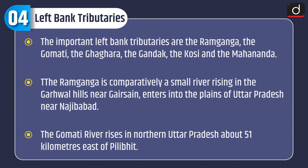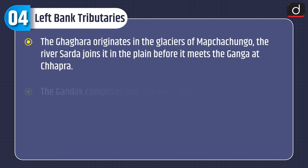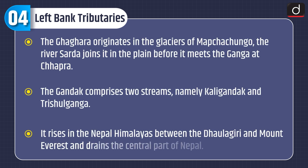The Ramganga is comparatively a small river rising in the Garhwal hills near Gersen and enters the plains of Uttar Pradesh near Najibabad. The Gomti river rises in northern Uttar Pradesh about 51 km east of Pilibhit. The Ghagra originates in the glaciers of Mapchachungo, and the river Sarada joins it in the plains before it meets the Ganga at Chhapra.